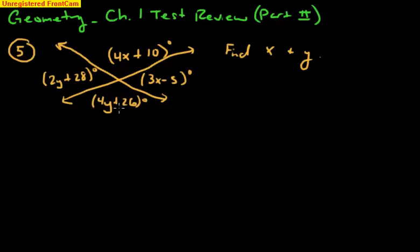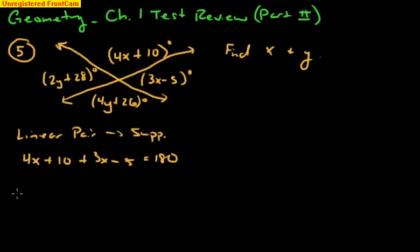Well, in order to do this, we need to understand the relationship between the angles with x and the angles with y. In this problem, these two angles have x in them. They are adjacent angles and they form this line. Therefore, they are a linear pair. We have a linear pair with the x's, and we know that linear pairs are supplementary. So 4x plus 10 plus 3x minus 5 is going to equal 180. And we combine our like terms.